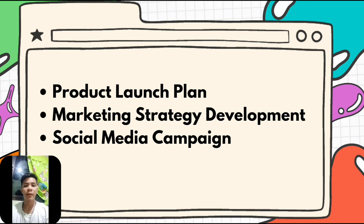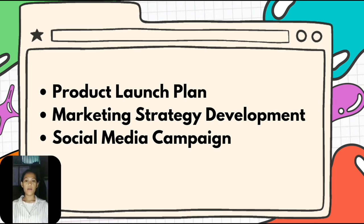Second example: marketing strategy development. This involves creating a comprehensive marketing strategy that outlines the overall direction and goals of the company's marketing efforts. It includes defining target markets, positioning the brand, and identifying competitive advantages and setting marketing objectives. Third, social media campaign: developing a comprehensive social media campaign targeting a specific audience segment. This involves creating engaging content, leveraging influencers, and using targeted advertising to increase brand awareness and drive customer engagement.